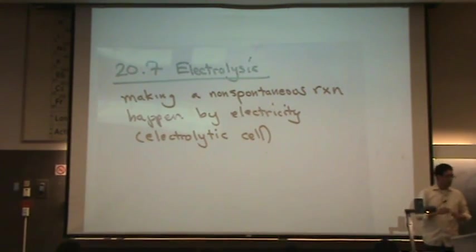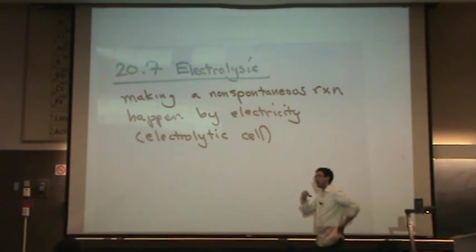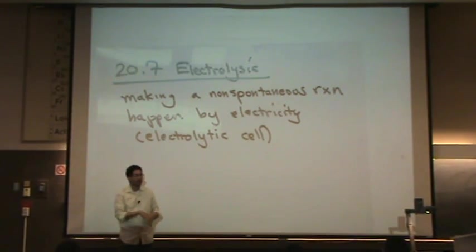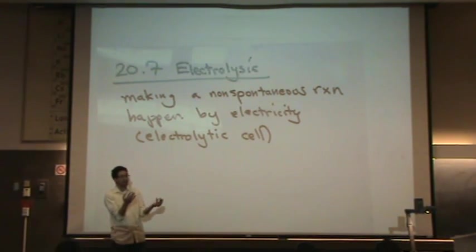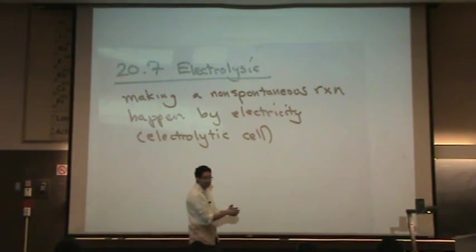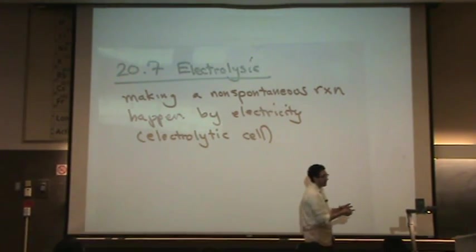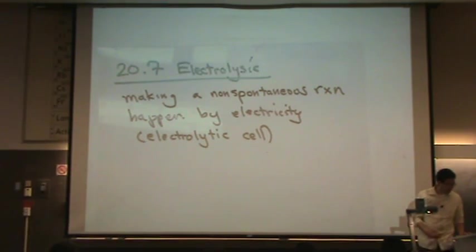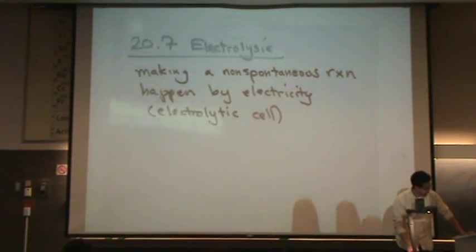So you may come across some cells that we think are galvanic and spontaneous, and you calculate its potential or you measure the potential and it's negative. If it's negative, that cell is not going to go. It's not spontaneous. But you can make it happen by putting in electricity to force it to happen if you overcome the energy barrier. So you can make non-spontaneous processes happen, and those are called electrolytic cells.